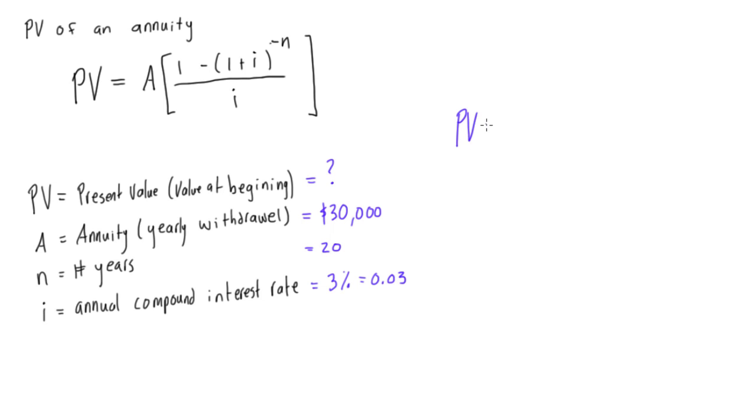So let's find out what it is. We have PV equals, A is 30,000, times all of this stuff. So we have 1 minus 1 plus 0.03 to the power of negative 20, right, that's a negative n. Make sure you have that negative sign there. And this is all over 0.03.